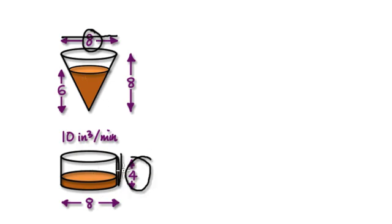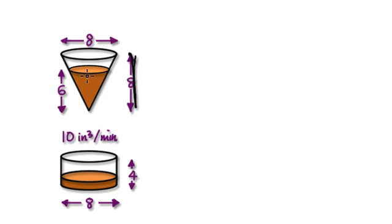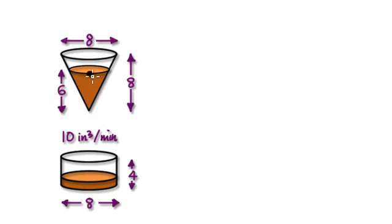This here is 4 — the height is 4. When the level here is dead on 6 inches, what is the speed at which it's falling? So what is the rate at which it's falling?